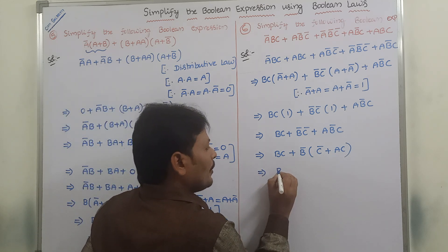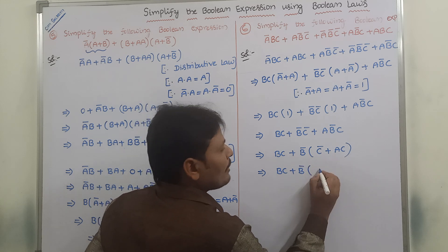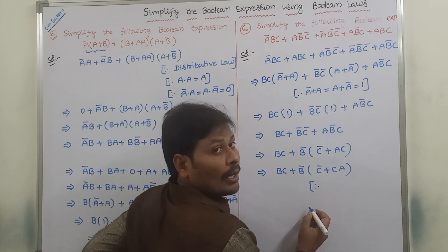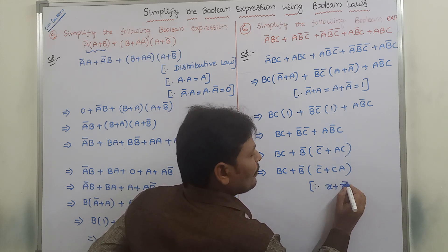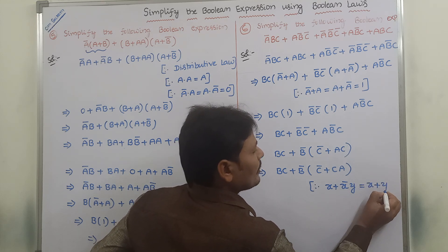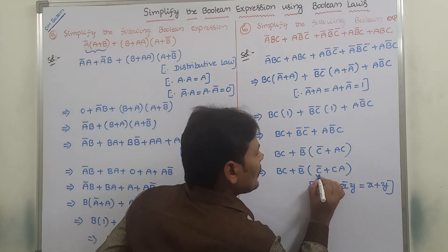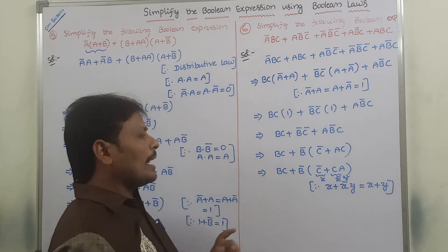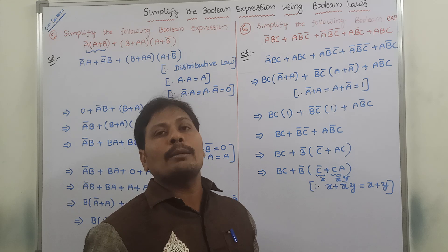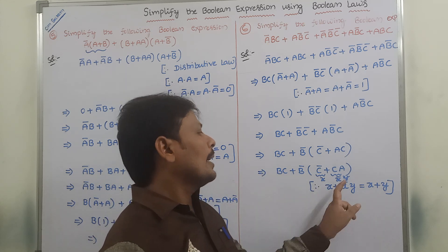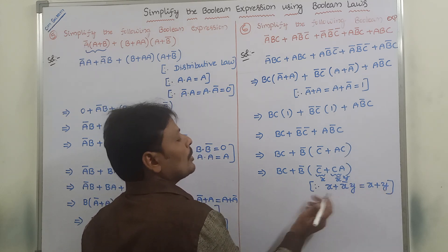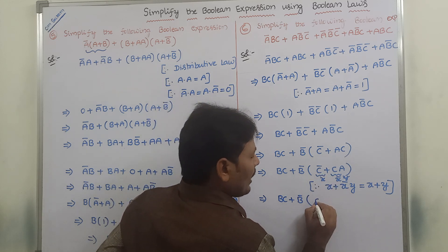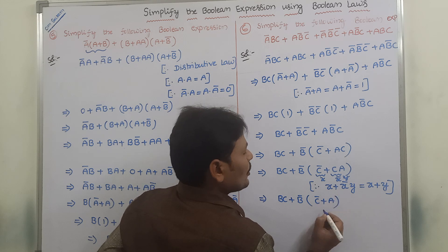So we have B·C plus B-bar·(C-bar plus A·C). We already know the absorption formula: X plus X-bar·Y equals X plus Y. According to this formula: this is X and this is X-bar and this is Y. In place of X, C-bar is there; X-bar is C-bar-whole-bar which is C; in place of Y, A is there. So X plus X-bar·Y equals X plus Y, therefore C-bar plus A·C simplifies to C-bar plus A.